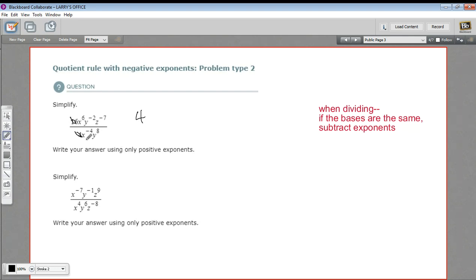Now I want to take the x's. I have x to the 6th on top and x to the negative 4th on the bottom. This is really x to the 6th divided by x to the negative 4th. When you divide, if the bases are the same, you subtract the exponents. So this is x to the 6th minus a negative 4.